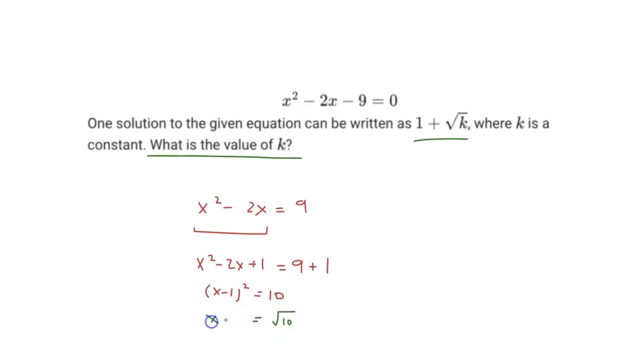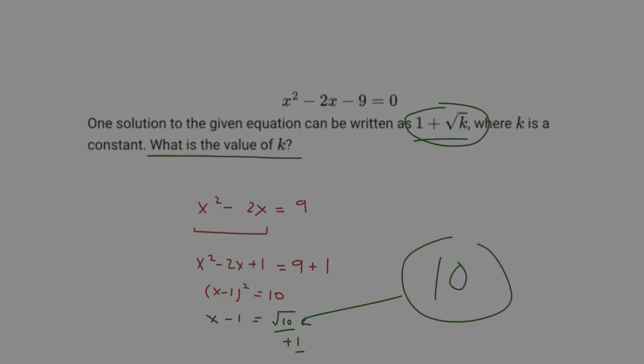That will be equivalent to x minus 1. If we add 1 on both sides, we end up getting 1 plus square root 10 equals x. And we can see that one of the solutions can be rewritten as 1 plus square root k. So in our case, we have the plus 1, and then we have the square root 10. So the value of k must be 10. And so that must be our answer.